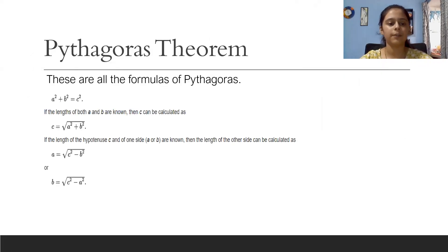Pythagoras theorem. These are all the formulas for Pythagoras theorem. a square plus b square equals c square. If the length of both a and b are known, then c can be calculated as c equals the square root of a square plus b square.